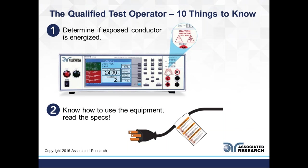Moving on to the ten things a qualified test operator should know. Number one: determine if an exposed conductor is energized. We have symbols and lights on our instruments — if the high voltage light is blinking, there is a live conductor somewhere on your station. Also, there are multiple output ports on our instruments, and if you're outputting on one, you're likely outputting on the other. If you have 1240 volts coming out the front, it's probably also coming out the back, and not many people are aware of that.